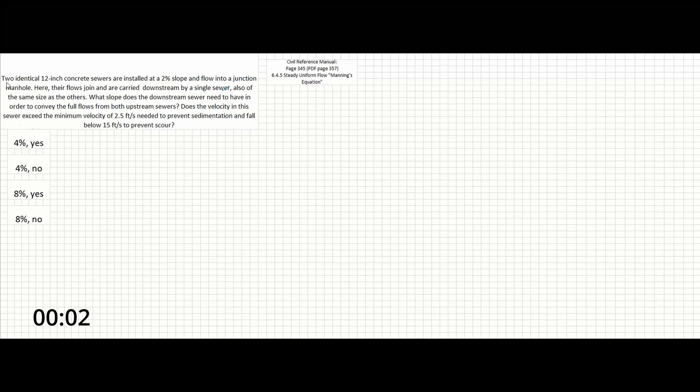Okay guys, in this problem we have two identical 12-inch concrete sewers that are installed at a 2% slope and flow into a junction manhole here. Their flows join and are carried downstream by a single sewer also of the same size as the others. What slope does the downstream sewer need to have in order to convey the full flows from both upstream sewers? Does the velocity in this sewer exceed the minimum velocity of 2.5 feet per second needed to prevent sedimentation and fall below 15 feet per second to prevent scour?